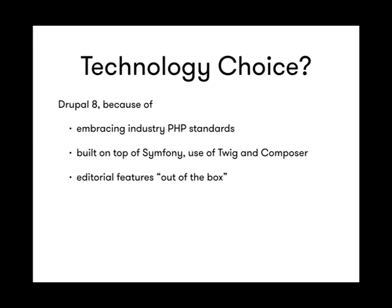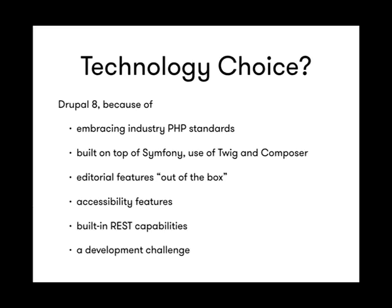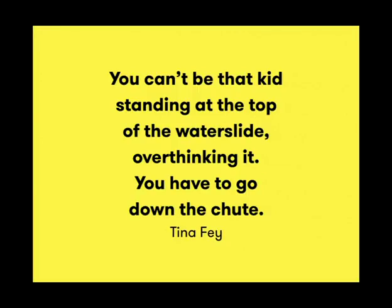Editorial features out of the box are very important because we want to build these landing pages. Accessibility — there was a great talk today about that, and it's really important for us — we want the website to be accessible by as many users as possible. Building REST capabilities. And at some point in 2015 when we were weighing our options, we said we've got to make a decision, we've got to have this site out in a couple of months, so let's just dive into it.